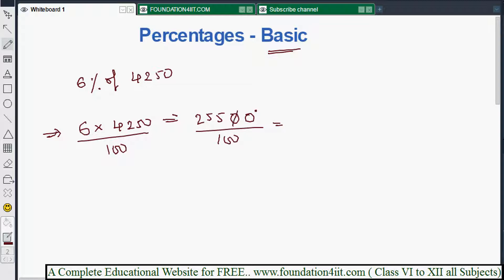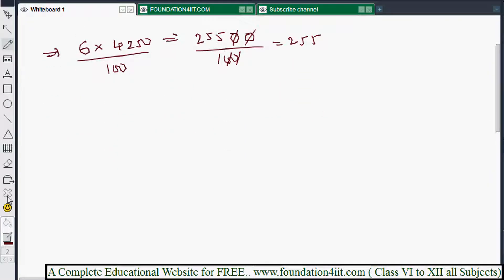So 100 is nothing but you can cancel two zeros. In case if zeros are coming, it's 255. For example, apart from zeros if you get some other number, let me take one question here. I'm taking the same, one value: 6% of 4256.